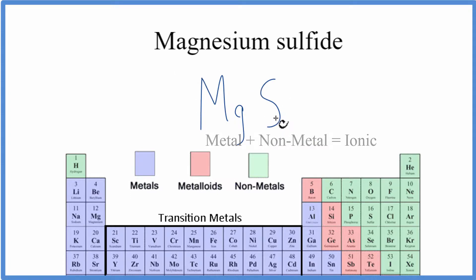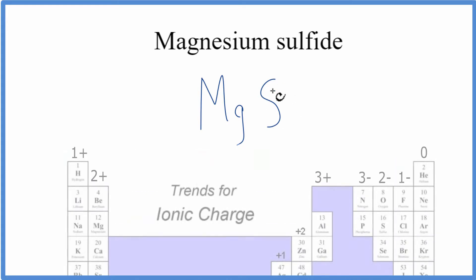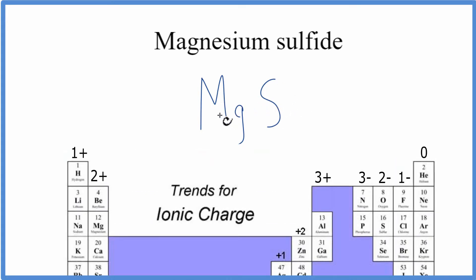So for magnesium, we can look on the periodic table again, we see that has a 2 plus charge, and the sulfide, that has a 2 minus charge.